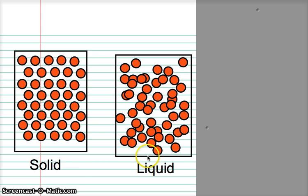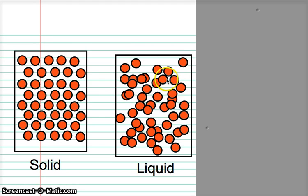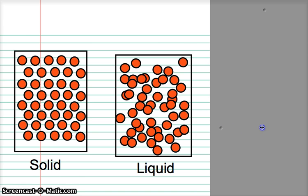Because the particles haven't spread out that much, the density of solids and liquids are going to be similar. The density of solid aluminium and liquid aluminium is not very different. The density of solid water or ice and liquid water is not hugely different — in fact liquid water is more dense than solid water or ice, for other reasons.